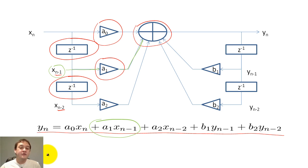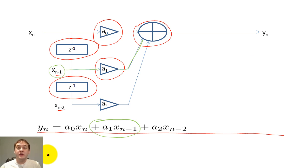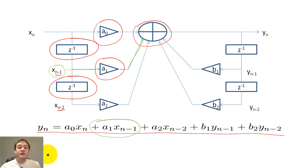When there is no feedback loop, we say that the filter is non-recursive and has finite impulse response. When there is a feedback loop, we say that the filter is recursive or has infinite impulse response.